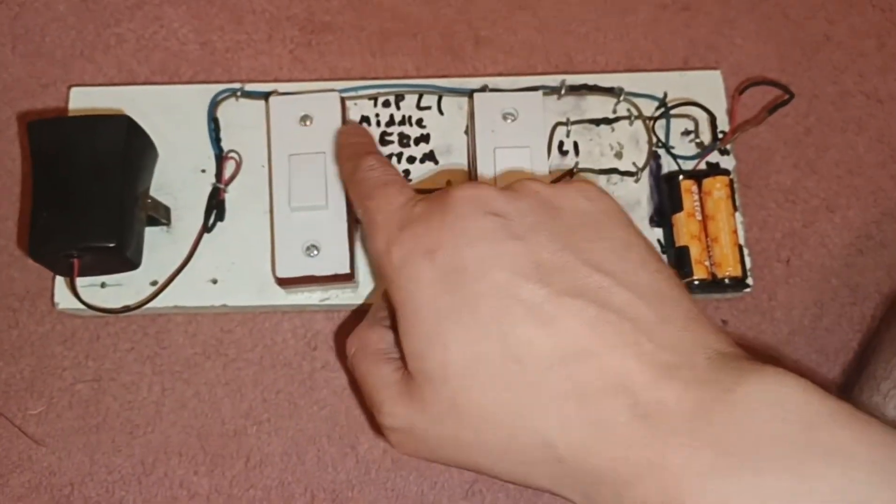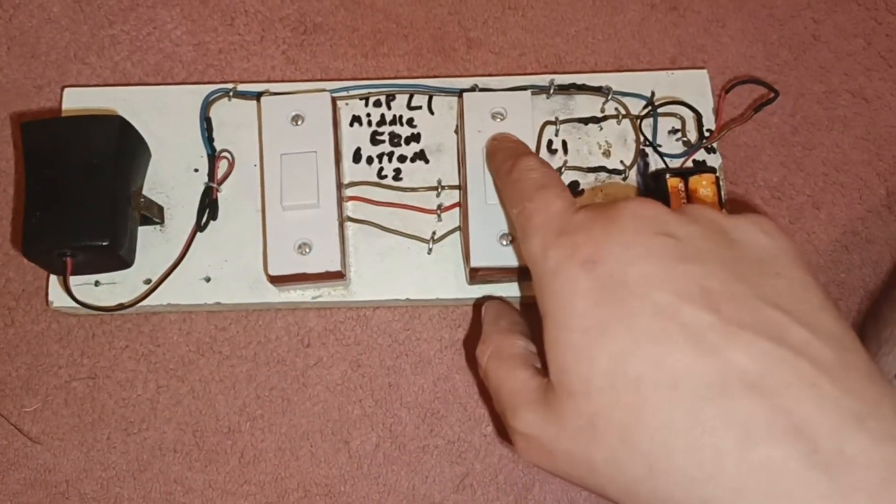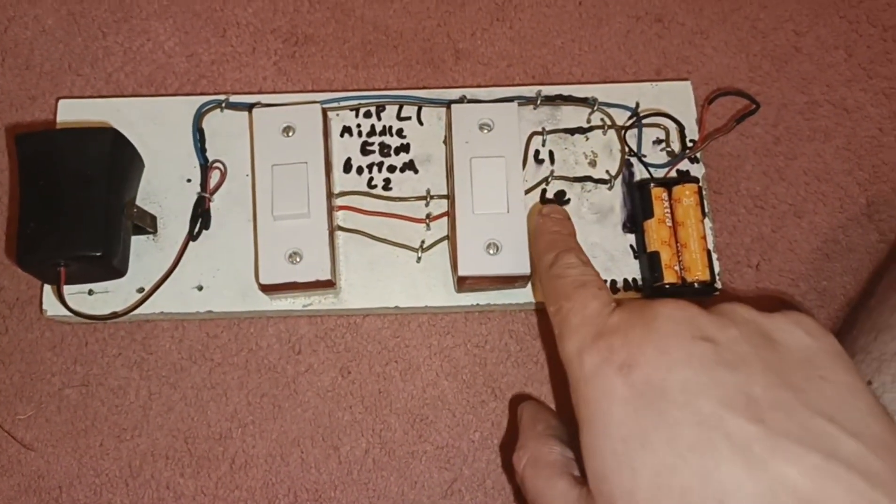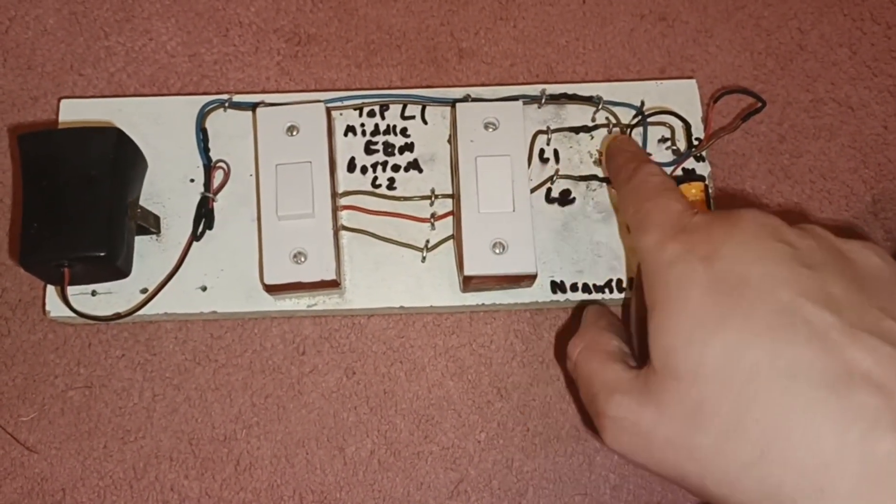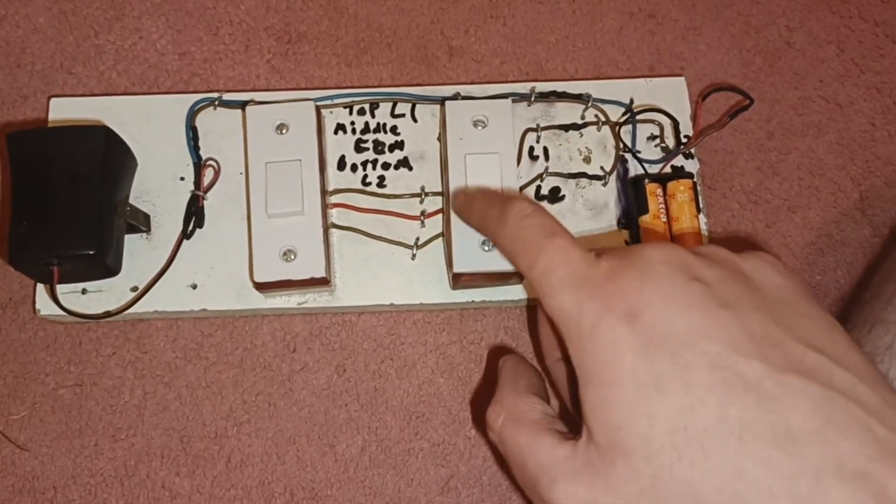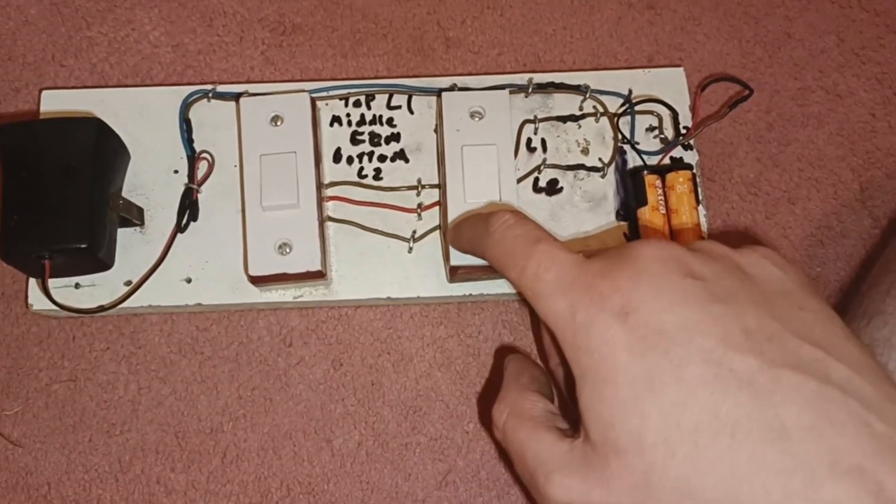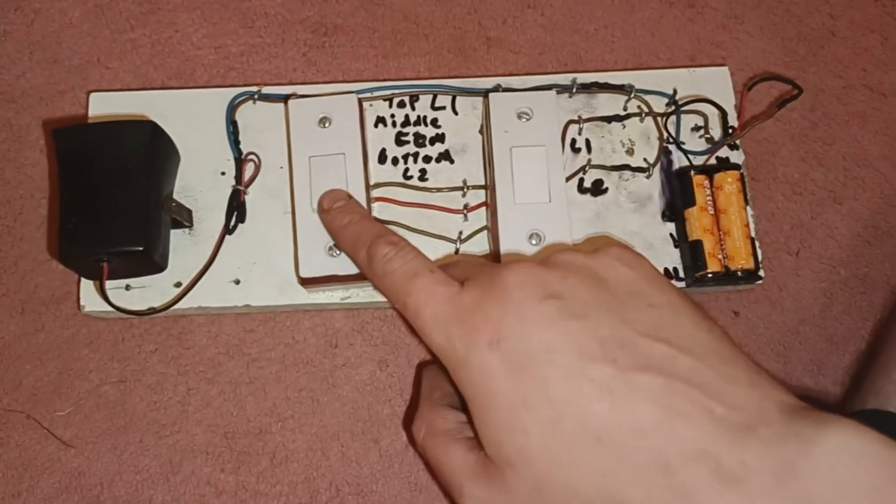The common wire, which is that red one, is basically going from that switch to that one straight. And then L2, which is the one going to the buzzer, is on that side and then it's going to that bit. So when I turn that on...